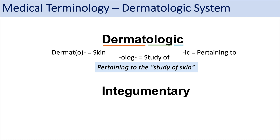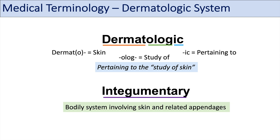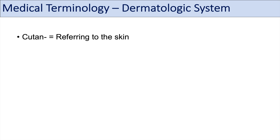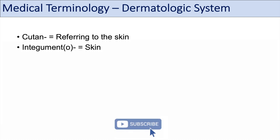Before we move into the different prefixes and suffixes, I want to talk about the word integumentary. You might have heard of the integumentary system — it's a bodily system involving skin and related appendages. The prefix cutane means referring to the skin, and the prefix integument or integumento also refers to skin. That's where integumentary system comes from — integument means skin.